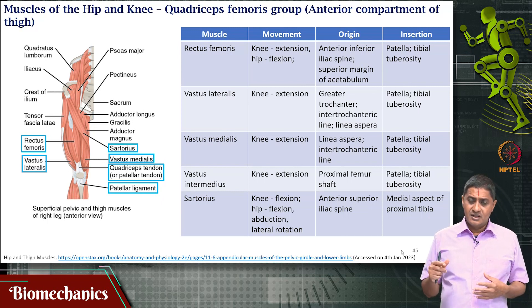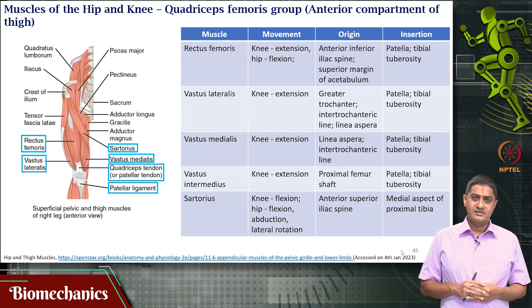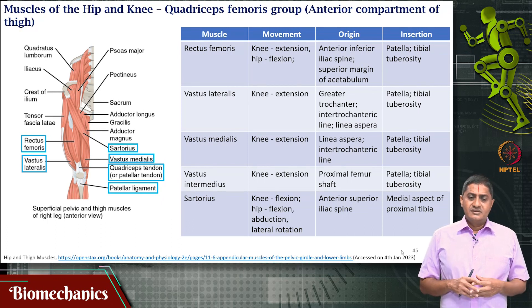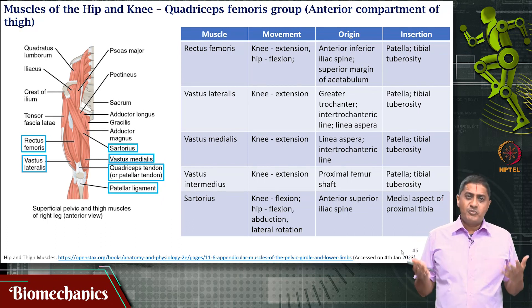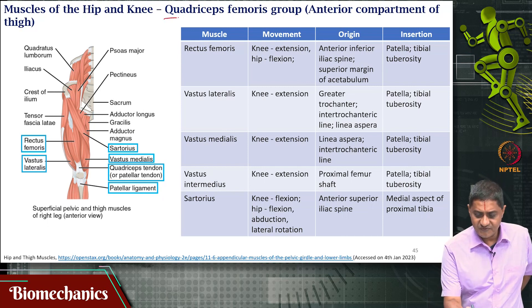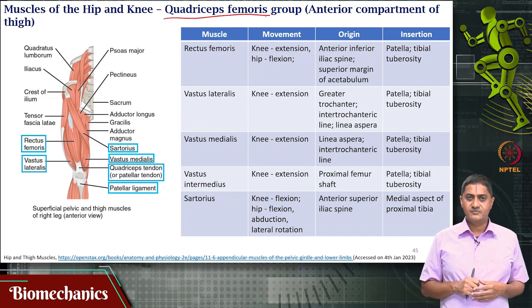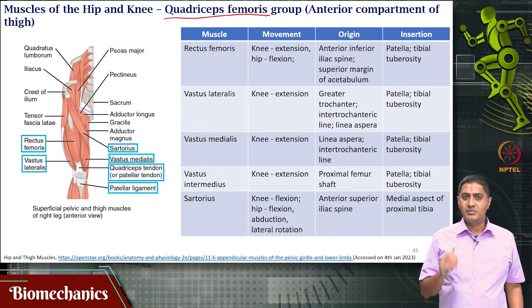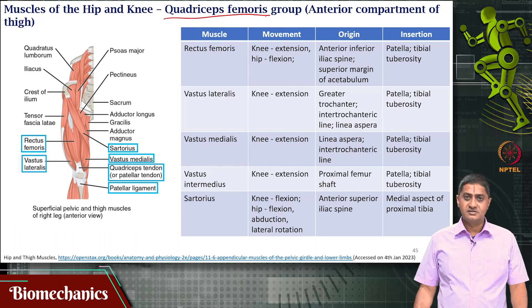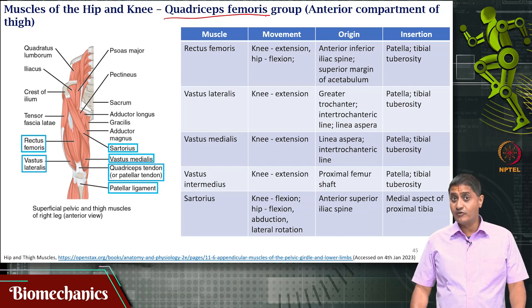The muscle that attaches to this patella or the tendon — this group of muscles is called the quadriceps femoris group. Quad means 4, and it has 4 members. Whenever you say quad means 4, tri means 3, penta means 5, and so on. So there are 4 muscles.